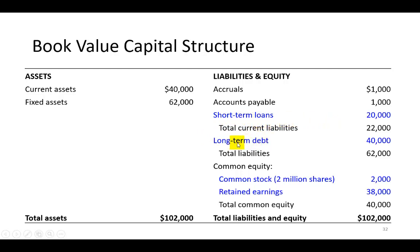You can also lend money to the firm long-term and receive interest income, so debt holders are investors. Likewise, equity holders — common equity holders — are the basic investors of the firm because they own the firm. They expect the firm to pay them dividends, or at least to run successfully to provide a capital gain in the future. Debt holders and equity holders are the firm's investors, and the money they provide is regarded as investor-supplied capital, highlighted here in blue.